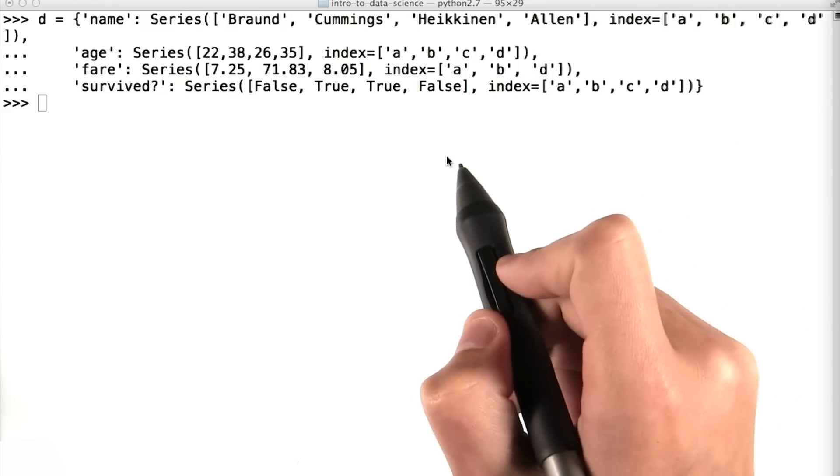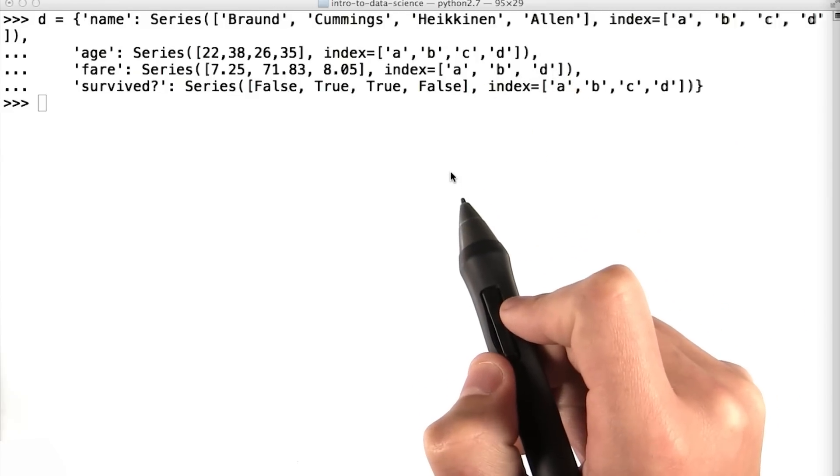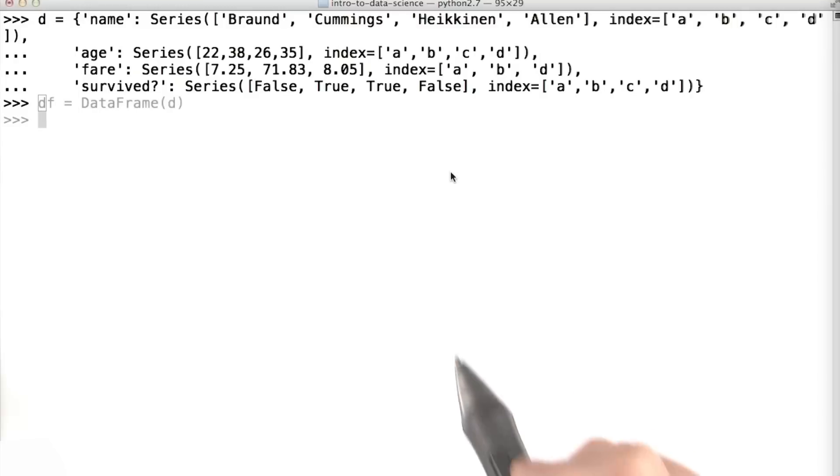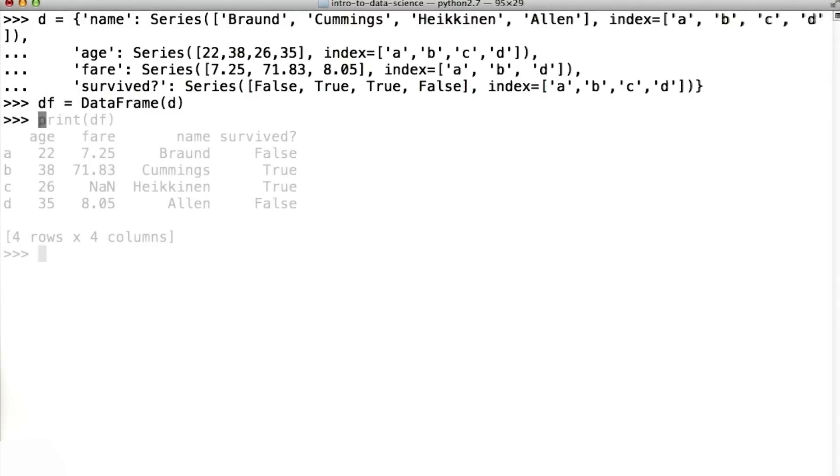Once I've created this dictionary, I can pass it as an argument to the data frame function to create my actual data frame. Here, I'll call that data frame df. You'll see that the data frame we've printed here matches the one that we had on the tablet earlier in this lesson.